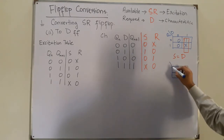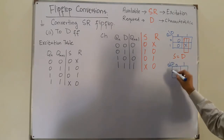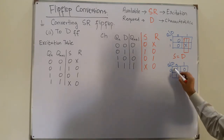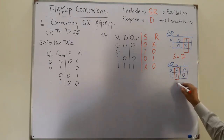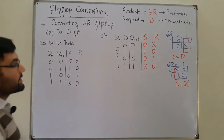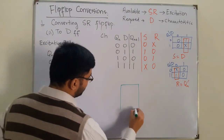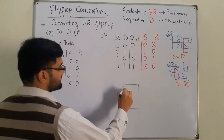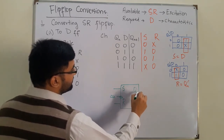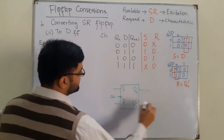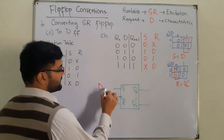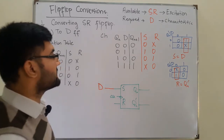For R, we have a four-cell map with Qn and D: filling in X, 0, 1, 0. Again a single group of one, giving R = Qn complement. Now we draw the circuit diagram using the block diagram. The available SR flip-flop has inputs S and R, a clock input, Qn output, and Qn complement output. You replace S with D directly, and for R you connect Qn complement.